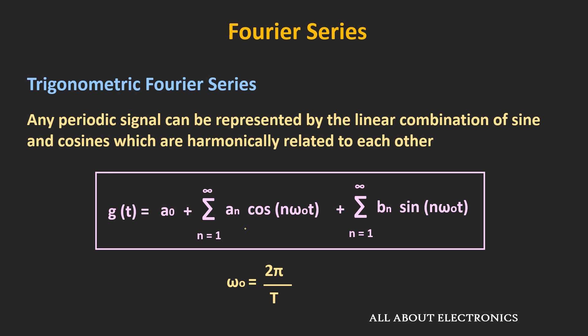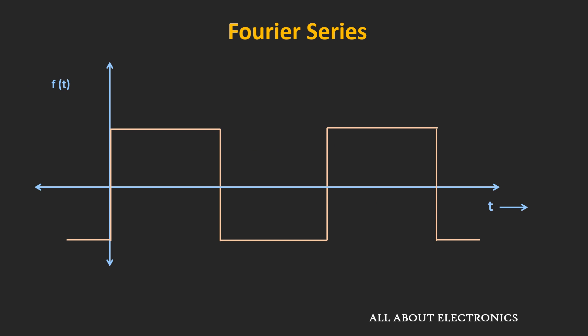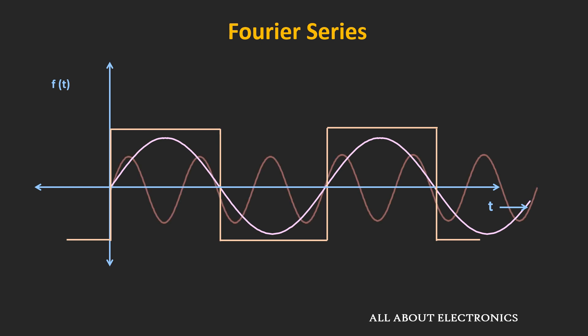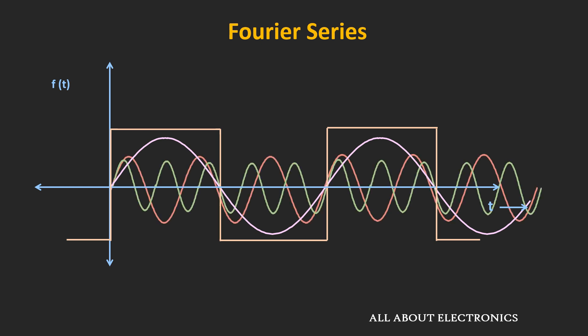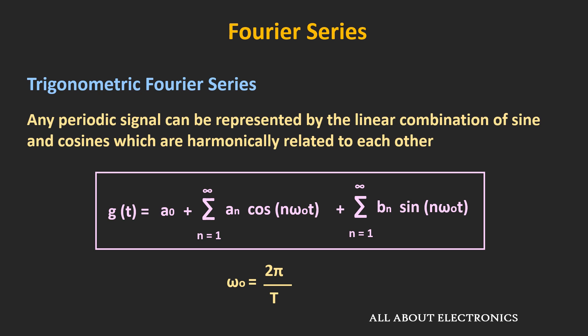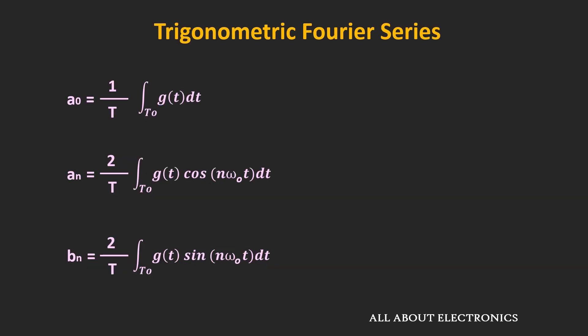The signal is represented in terms of sine and cosine waves. For example, if we take a square wave with some frequency f, then it is composed of the sinusoidal signal of the fundamental frequency and its odd harmonics — like the third harmonic, the fifth harmonic, the seventh harmonic and so on. The amplitude of sine and cosine waves can be found from the Fourier series coefficients: a0, an, and bn. These coefficients represent the amplitude or weightage of the sine and cosine waves. Here, a0 is the DC component. The an and bn can be found from their respective expressions, where n varies from 1 to infinity.